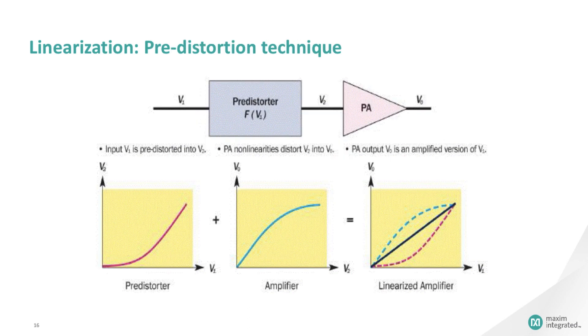For the pre-distortion technique, the principle is very simple. Since the PA is distorting, just distort the input signal in the opposite way. This method requires knowing the PA characteristics. A possible enhancement is to make the correction according to the PA output. We then have an adaptive pre-distorter.